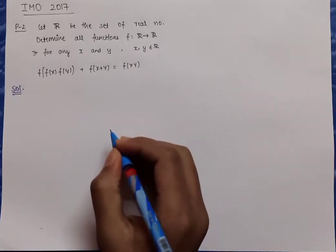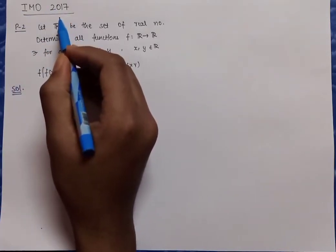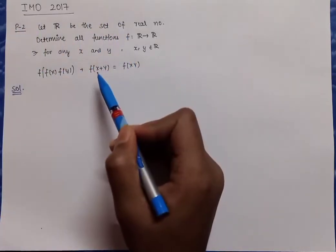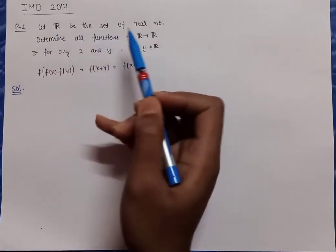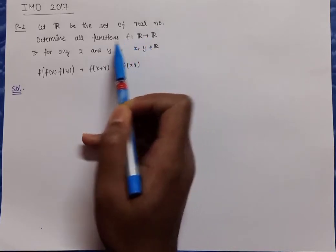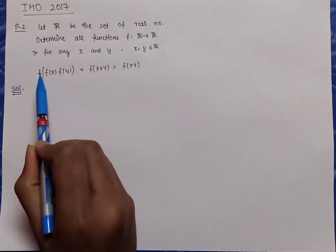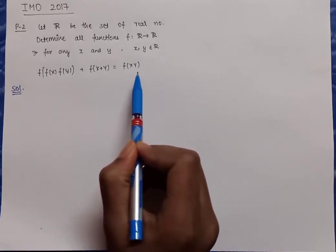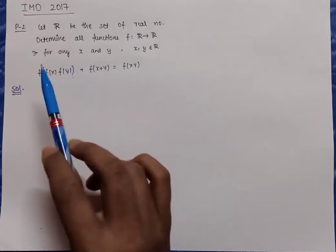Hello friends, today we are going to solve a problem which was asked in IMO 2017 — International Mathematics Olympiad — and it was problem number 2. This question was from the functional equation chapter. The question: let R be the set of real numbers, determine all functions mapping from R to R such that for any x and y in the reals, f(f(x)·f(y)) + f(x+y) = f(xy).